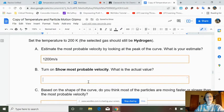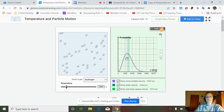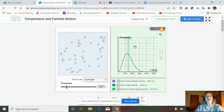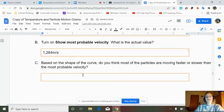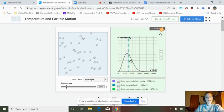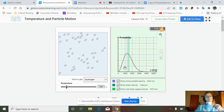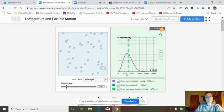Turn on the most probable velocity. Look at that, 1,284. We were pretty darn close. Based on the shape of the curve, do you think most of the particles are moving faster or slower? Let's take a look. Is there more area over here or over here? I would say over here. So that's faster.